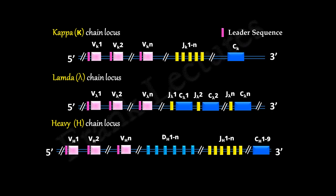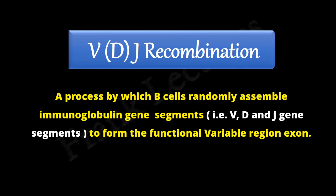In today's video lecture we will study VDJ recombination. VDJ recombination is a process by which B cells randomly assemble multiple immunoglobulin gene segments to form functional variable region exon.